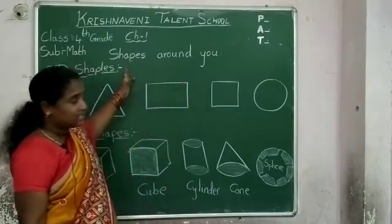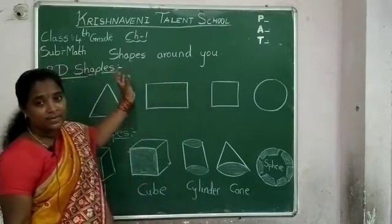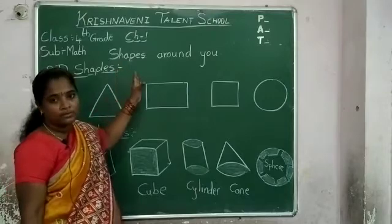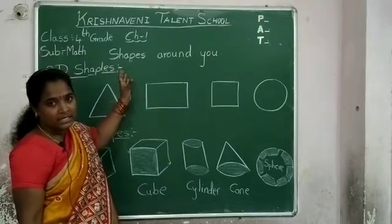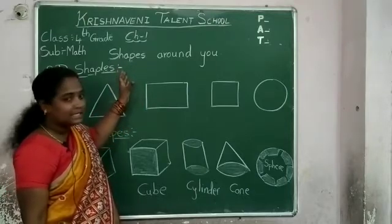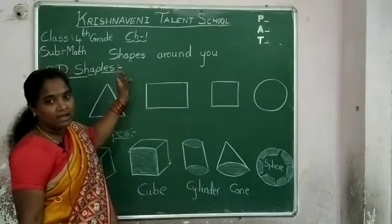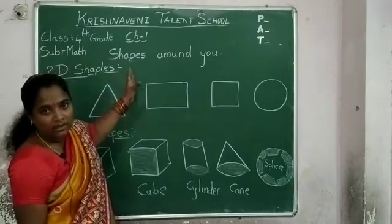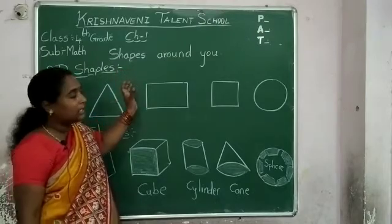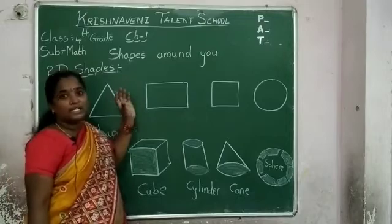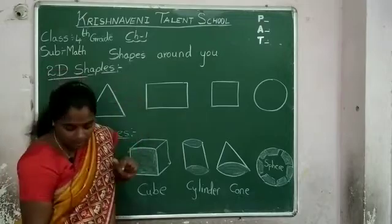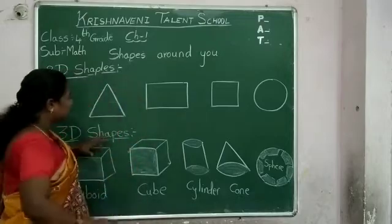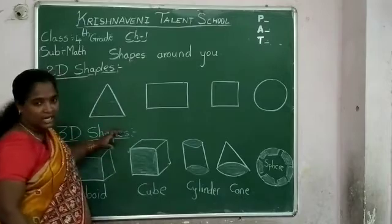Now, what is a shape? Shape is anything or any object. In mathematics, shapes and space are called geometry. Generally, shapes are of two types. What are they? 2D shapes and 3D shapes.